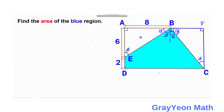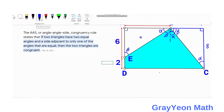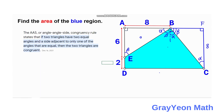Since we have formed a rectangle by drawing the two blue segments BF and FC, segment FC should equal 6 plus 2, which is 8 units. We also note that side AB equals side FC — both are 8 units — which is the side adjacent to angle alpha in both white triangles.